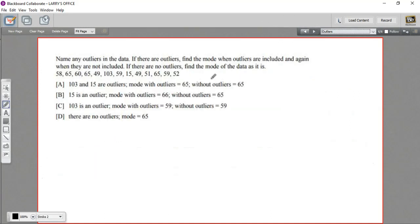All right, let's try one more. This one says, name any outliers in the data. If there are outliers, find the mode when outliers are included and again when they are not included. If there are no outliers, find the mode of the data as it is. Okay, well, let's look at this data set.